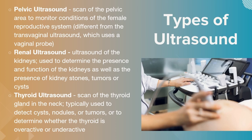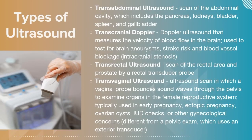Renal ultrasounds look at the kidneys, their function, and check for tumors, gross anomalies, cysts, or stones. Thyroid ultrasound scans the neck and thyroid gland, checking for cysts, nodules, and tumors, and to make sure the thyroid is not enlarged or overactive or underactive. Transabdominal ultrasounds look at the abdominal cavity, particularly the organs — pancreas, kidneys, bladder, spleen, and gallbladder.